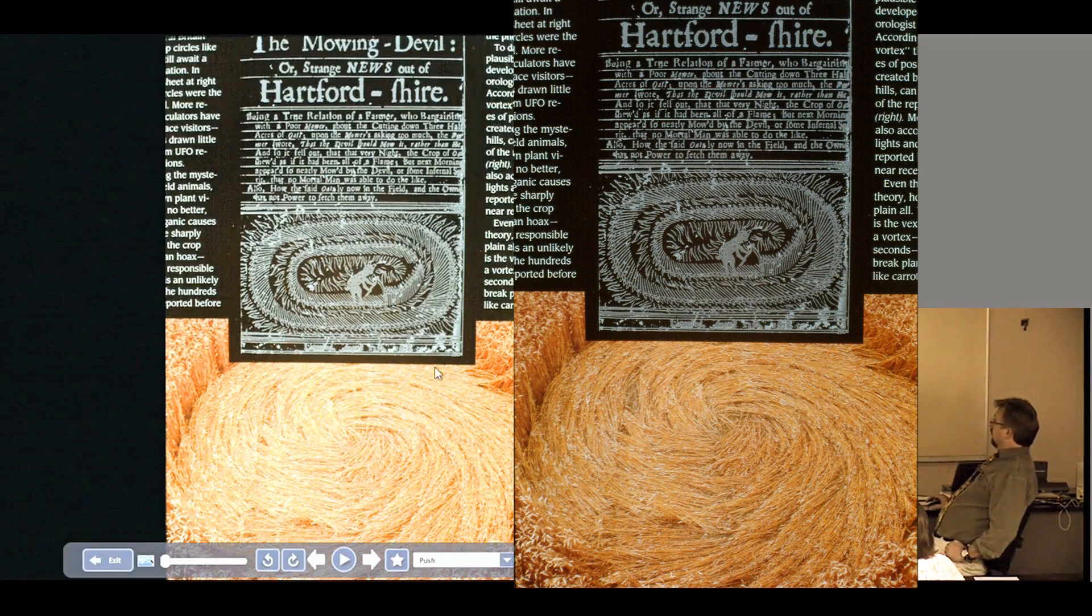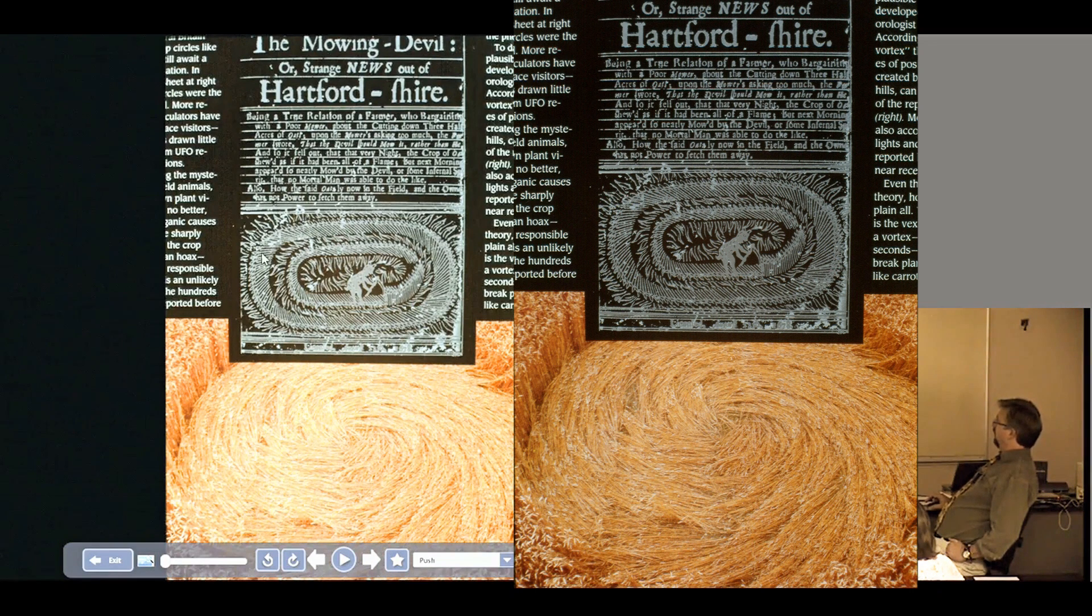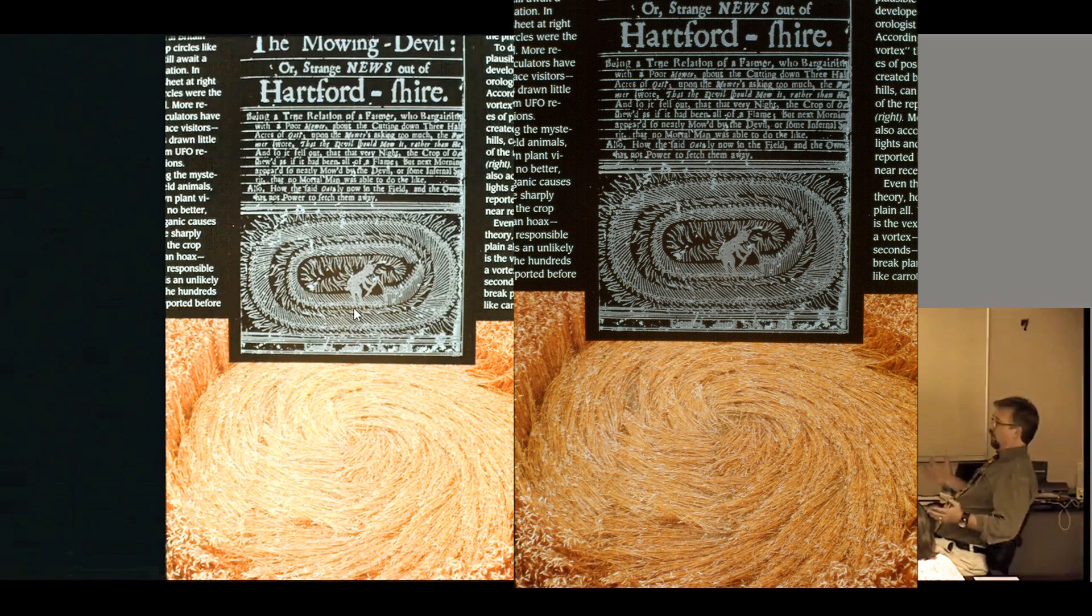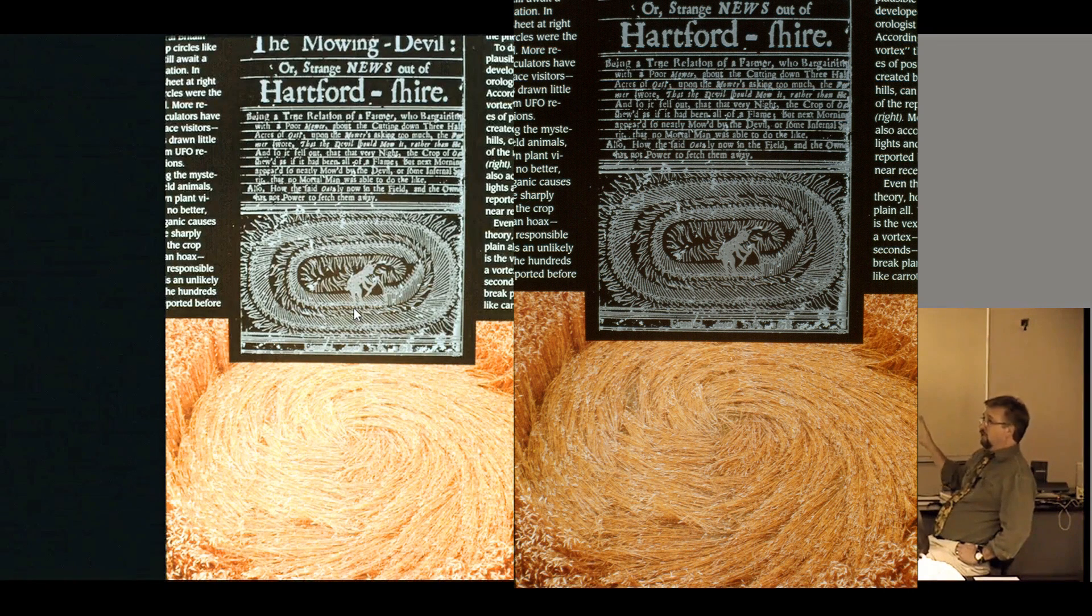You notice in this image there's an article from a newspaper from like the 1700s showing what they call a mowing devil. These features have been around for a long time, they're not just a recent phenomenon. People who are believers like to say, see, there were UFOs landing in the 1700s too and making these mowing devils or crop circles.